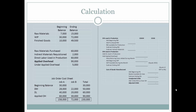We have some information: the beginning and ending balances for raw materials, work in process, and finished goods. We also have the raw materials purchased during the period, the indirect materials requisitioned for use in work in process from the raw material warehouse, the direct labor used in production, the amount of overhead applied to the job order cost sheet, and the amount of under-applied overhead.